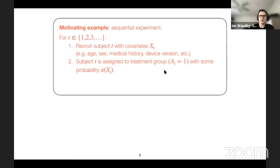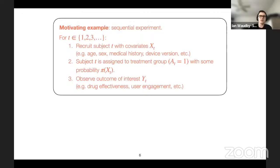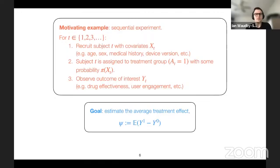We assign each subject to a treatment group — denoted one — or control group — denoted zero — so we're considering binary treatments. They're assigned to the treatment group with probability pi of x_t. In a Bernoulli experiment this could just be one-half, or it can depend on covariates. Then we observe some outcome of interest — in a clinical setting, effectiveness of a drug; in A/B testing, user engagement or ad clicks.